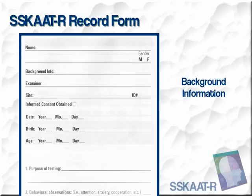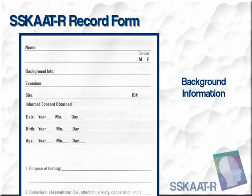The SCAT-R record form contains several sections. On page 1, place background information regarding the individual, including the name or identification number, gender, ethnicity if appropriate for research, the level of intellectual functioning if known, the site and location of the evaluation, date of testing, date of examinee's birth, calculation of current age, and any special needs.